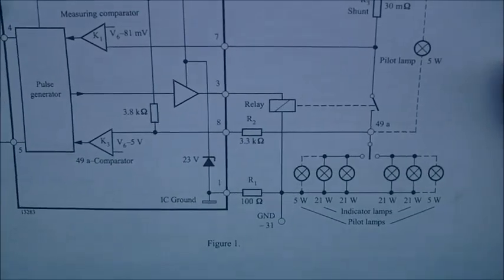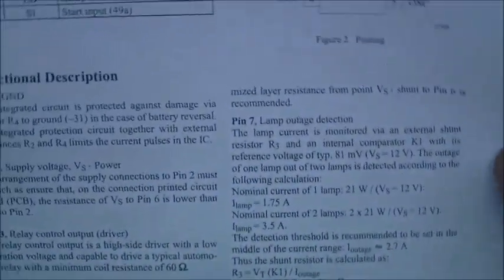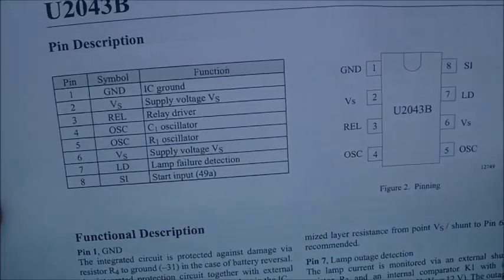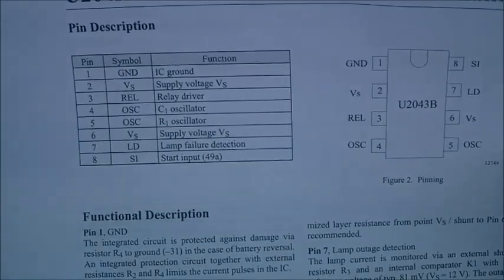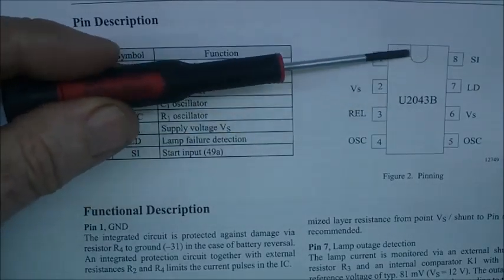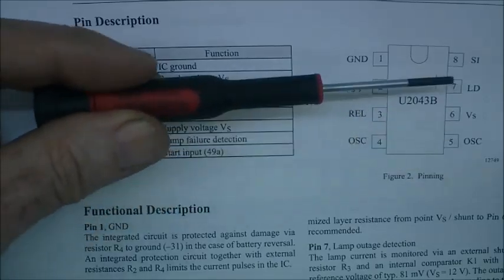When we flip over the page, you can see we get a pin-out for the actual chip itself. There are eight pins on board, and we can see where pin one is by looking for this little indentation there. That one is pin one, and it goes all the way around to pin eight.